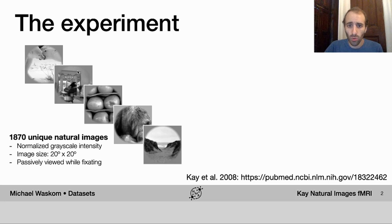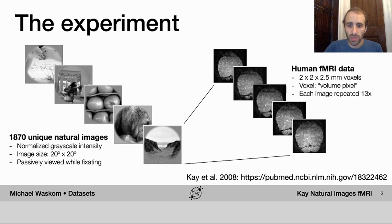While the subjects viewed these images, their brain activity was recorded using fMRI. Now fMRI, as you may know, records a signal related to the oxygenation of blood in the brain, which gives you an indirect correlate of neural activity.